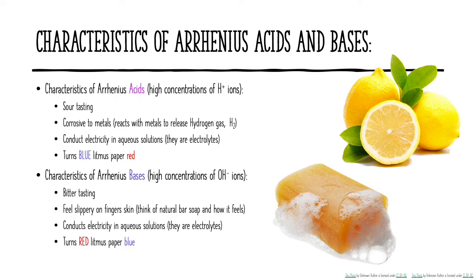Acids conduct electricity in aqueous solution. Remember from our last unit when we talked about electrolytes — acids are electrolytes. They produce ions in solution, and those ions allow electricity to flow through that solution. The last characteristic is that they turn blue litmus paper red. Litmus paper is called an indicator, and indicators undergo color changes when they're in the presence of an acid or a base, telling you whether something is acidic or basic.